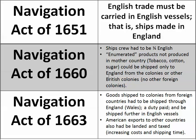The Navigation Act of 1660 required that a ship's crew had to be at least three-quarters English — to keep jobs for English shipmates. The second provision of this act listed enumerated goods or products not produced in the mother country, England. Goods like tobacco, cotton, and sugar could be shipped only to England or to other British colonies from the American colonies, but could not be exported to foreign nations for sale.